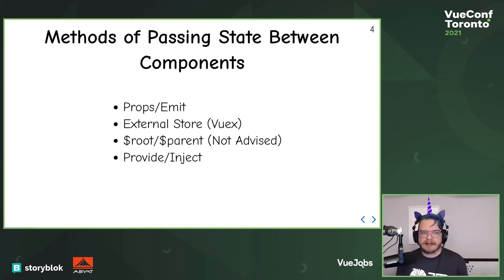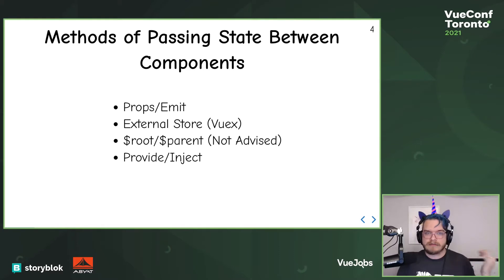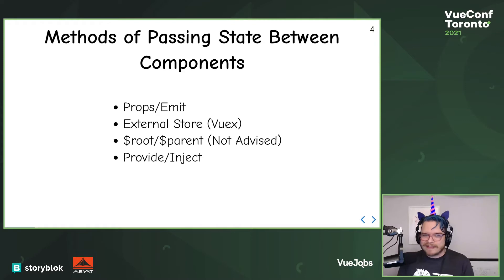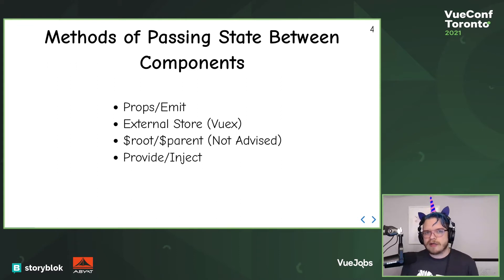We'll start off by covering the basic methods of passing state between components. We have props and emit, which Tessa very graciously gave us a wonderful chant about. We have Vuex as an external store. We have $root and $parent, which I'm going to advise against using. Don't use those. And then we have provide and inject.